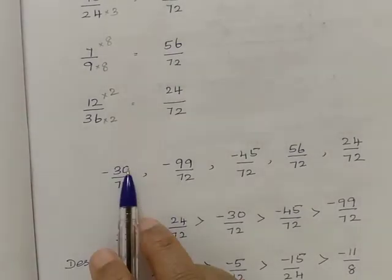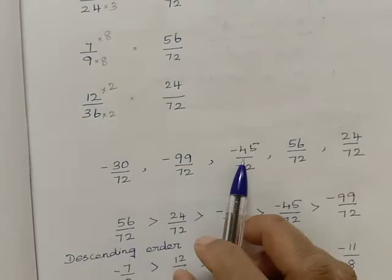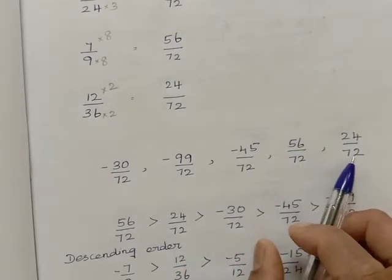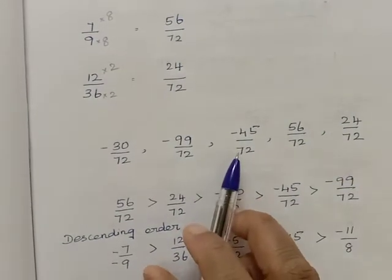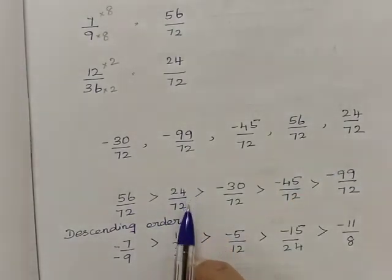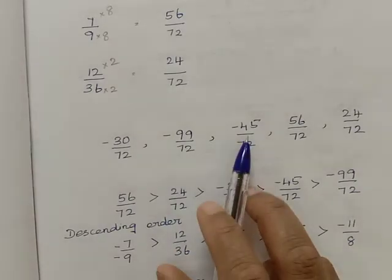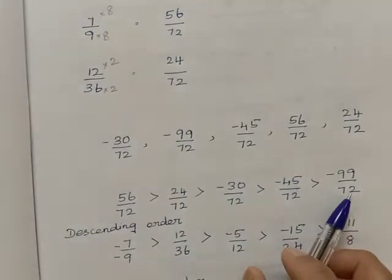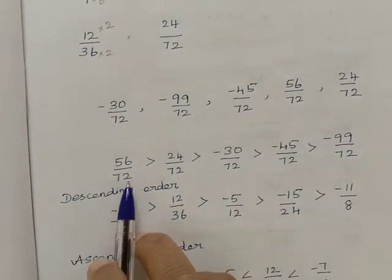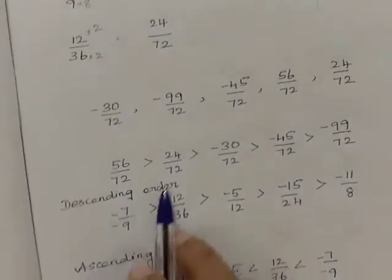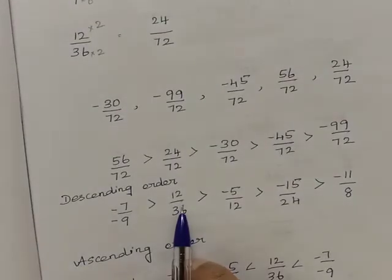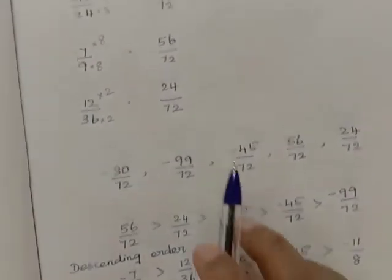After finding the LCM, the converted values are: minus 30 by 72, minus 99 by 72, minus 45 by 72, 56 by 72, and 24 by 72. All denominators are now the same. Comparing numerators: 56 by 72 corresponds to 7 by 9; 24 by 72 corresponds to 12 by 36; minus 30 by 72 corresponds to minus 5 by 12; minus 45 by 72 corresponds to minus 15 by 24; and minus 99 by 72 corresponds to minus 11 by 8.